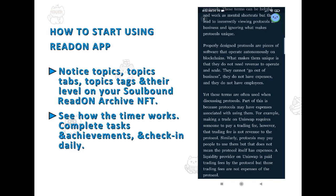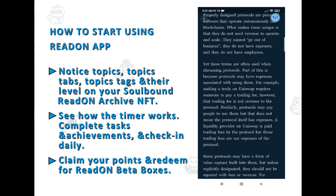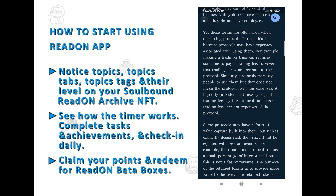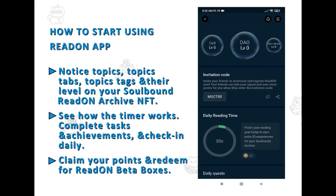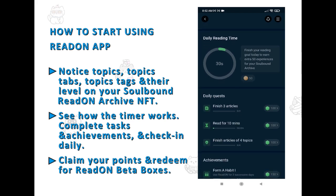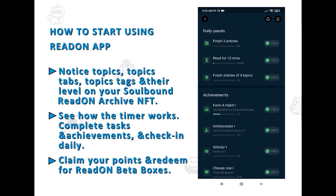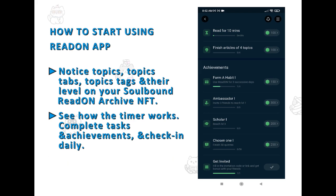If you tap on your avatar at the top right, or on the fourth button at the bottom navigation bar, you will be led to your personal center. There you can see info from your Read On archive NFT, your levels, your daily reading time, and your daily quests and achievements. By completing those, you earn points which you can redeem for Read On beta boxes. Remember to always claim your points in your personal center after you complete a daily quest or an achievement.